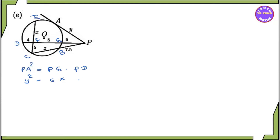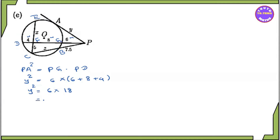BD. So, 6 yeh, 8 yeh, 4 yeh. No. And, 6 plus A plus 4. No. And y squared equal to 6 into. That's right. 18. 18. Now, y squared equal to 108.